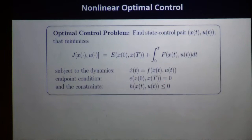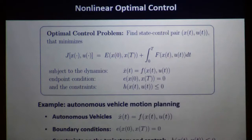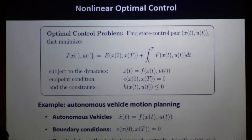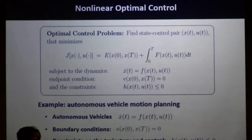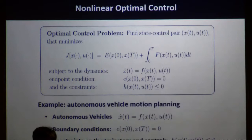This cost function equals two parts. The first part is called endpoint cost — costs associated to initial or final conditions of the state variable. The second part is called running cost, basically cost associated to the whole trajectory over the planning horizon. This standard optimal control problem can be used to model many different control applications. For instance, motion planning for autonomous vehicles or aerospace applications. Vehicle dynamics is given by the dynamic constraint, and you have initial and final conditions as boundary conditions.